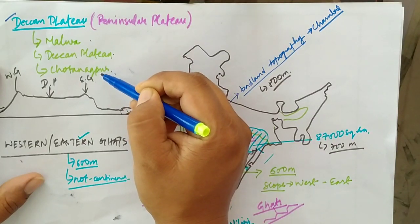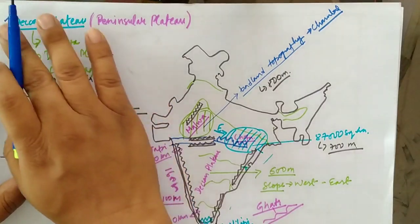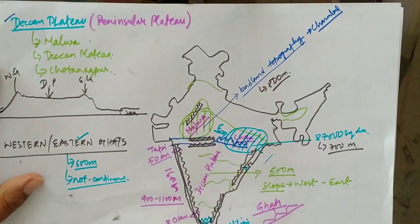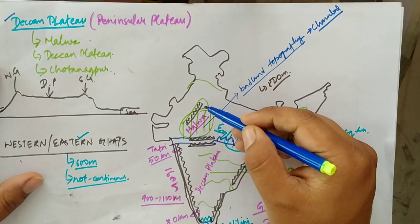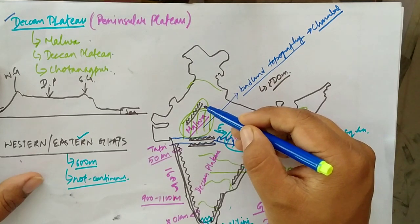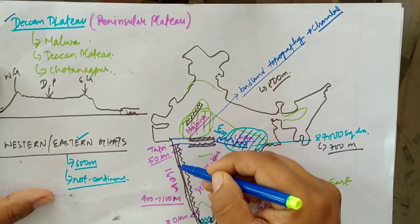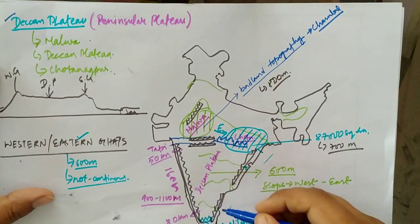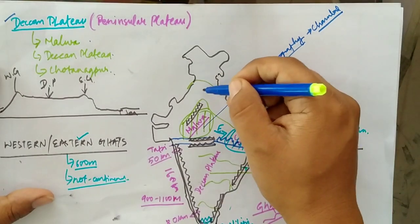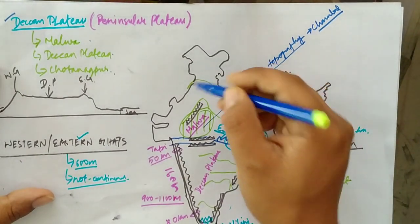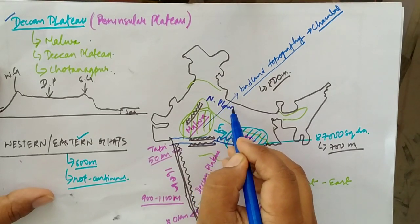Deccan Plateau, and Chotanakpur Plateau. Now let us observe some of the features or the relief of the Deccan Plateau or Peninsular Plateau. It is bounded by the Aravalli Mountains on the north-western part, Western Ghats on the western side, and Eastern Ghats on the eastern side.